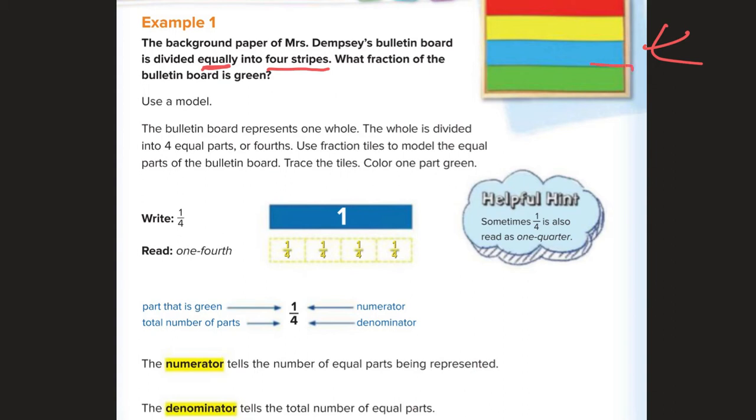Okay, so we can see that one part is green out of one, two, three, four, four total rectangles, or four total colors, right?